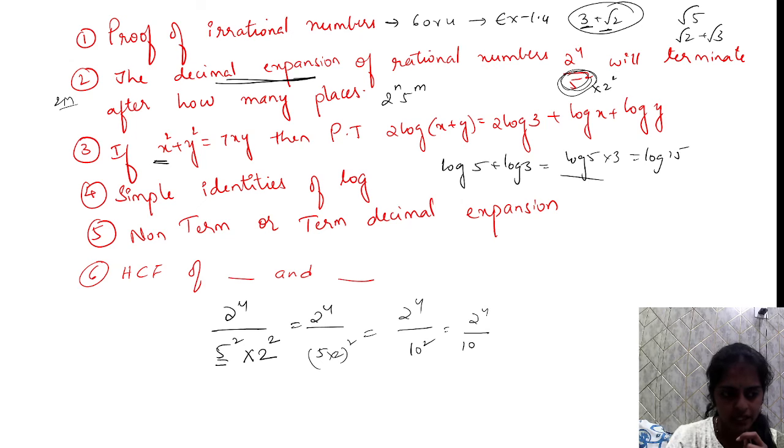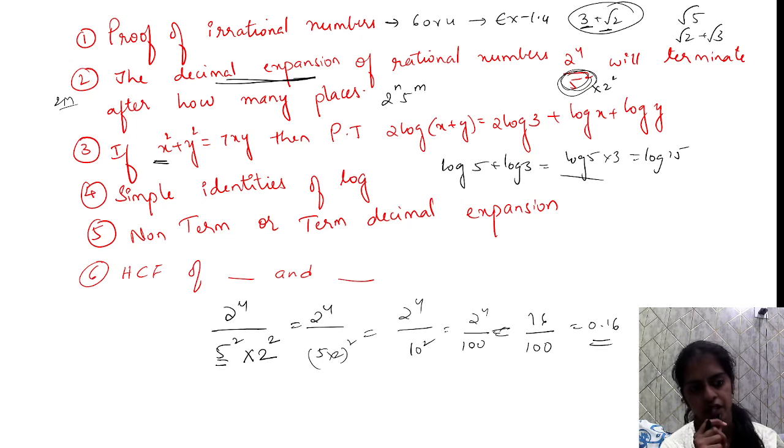2 power 4 by 10 squared equals 100. Divide this: 2 power 4 is 2 times 2 is 4, times 2 is 8, times 2 is 16 by 100. 16 by 100 is 0.16. This is terminating decimal.